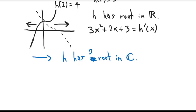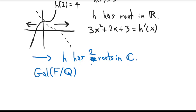Those two facts together tell us that h has a single real root and two complex conjugate roots. Whenever you have a polynomial with complex conjugate roots, complex conjugation must be in its Galois group. Complex conjugation is an automorphism; it is Q-linear, and because h has two complex conjugate roots, complex conjugation switches those roots — so it satisfies all criteria to be an element of Gal(h/Q). If we number the roots appropriately, we can write complex conjugation as a transposition.